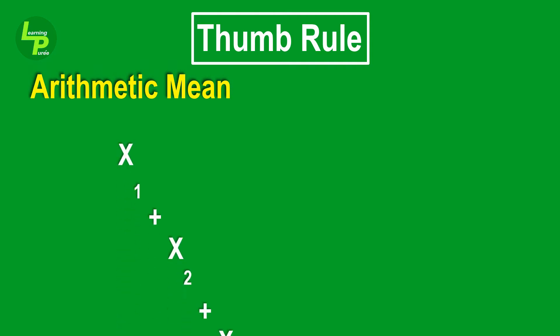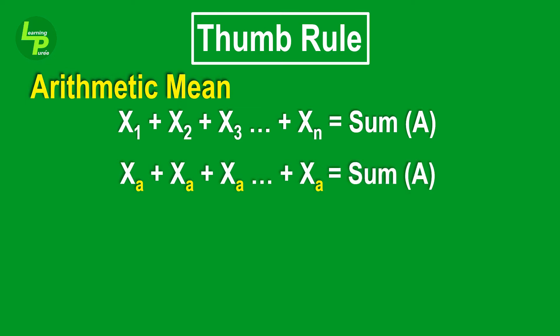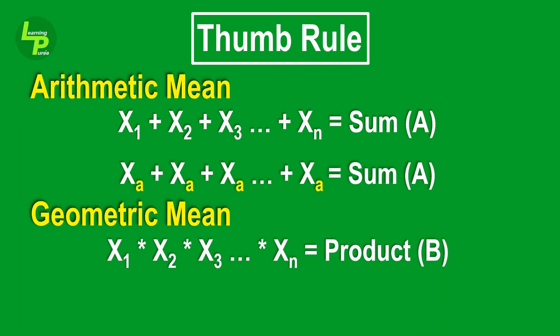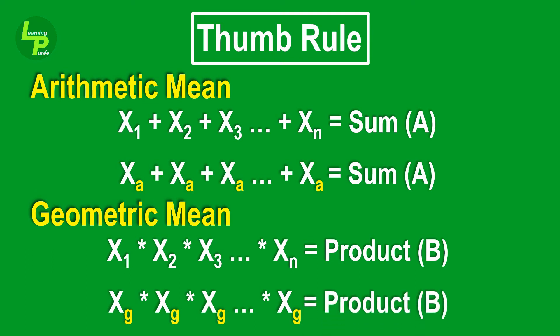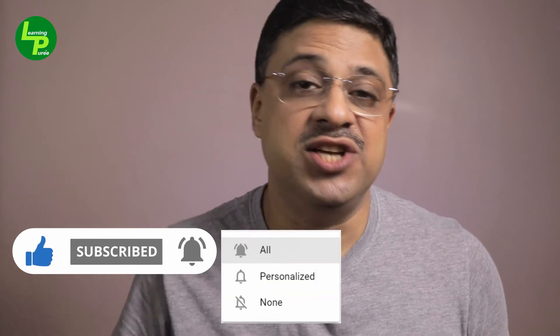Here's a quick thumb rule: whenever we need to add several quantities to produce a total, we use the arithmetic mean. The arithmetic mean answers the question — if all the quantities were the same value, what value would that be in order to achieve the same total? If you have found value till now, do subscribe to the channel and hit the bell icon to not miss more videos just like this one.